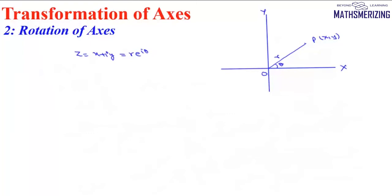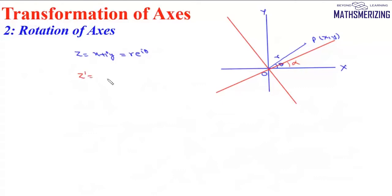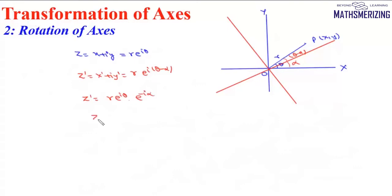Suppose we take another set of axes which makes an angle alpha with the given axes, keeping the origin the same, and suppose this alpha is in the anti-clockwise direction. In this new coordinate system, Z dash equals X dash plus iota Y dash, which can be written as R e to the power iota(theta minus alpha). So Z dash equals R e to the power iota theta times e to the power minus iota alpha, which means Z dash equals Z times e to the power minus iota alpha.